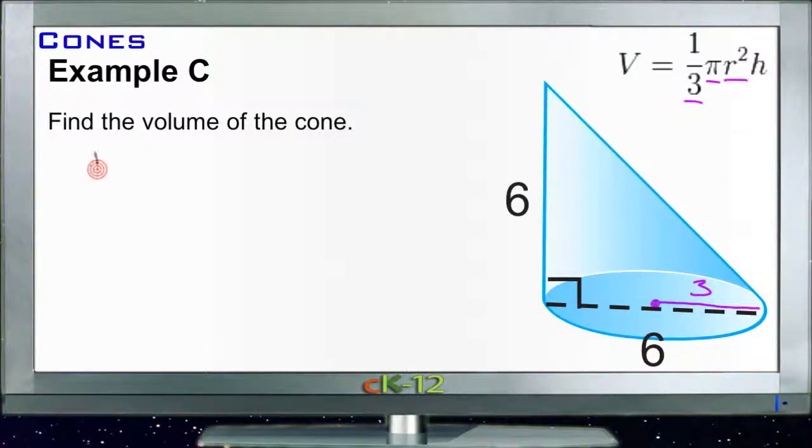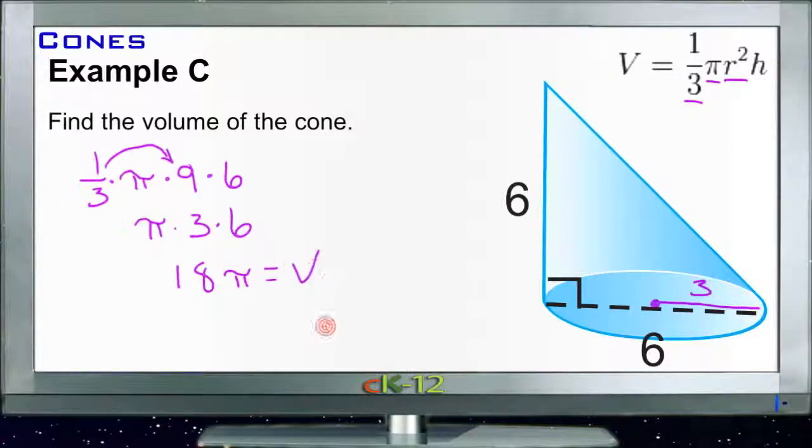We have one third of pi times 3 squared, that's 9, times our height which is 6. Now I'm going to take one third of 9 because that's easy. One third of 9 is 3, so now I have pi times 3 times 6. 6 times 3 is 18, so that gives me 18 pi is my volume. That was easy. All done.